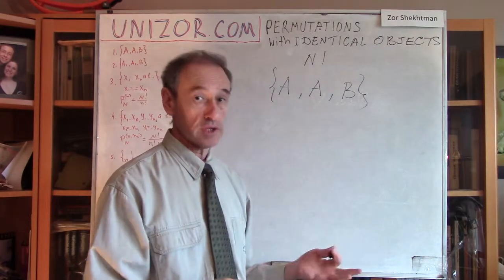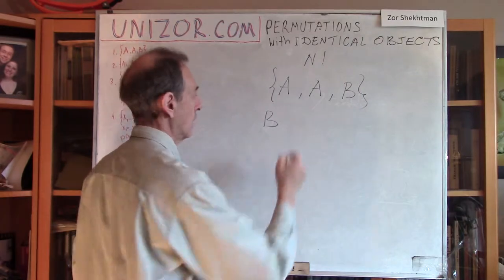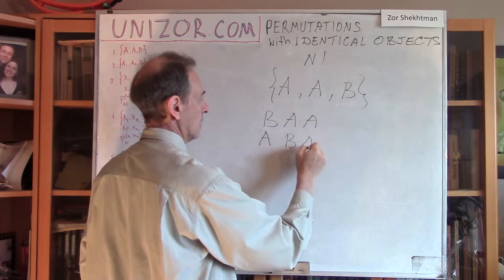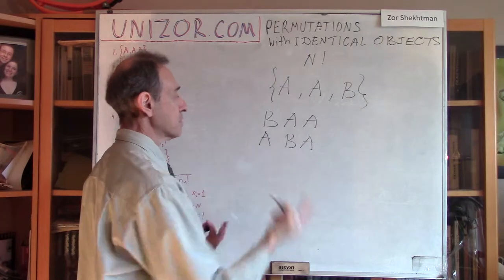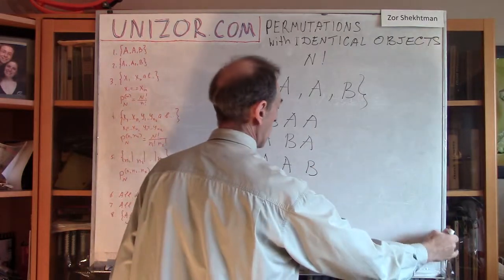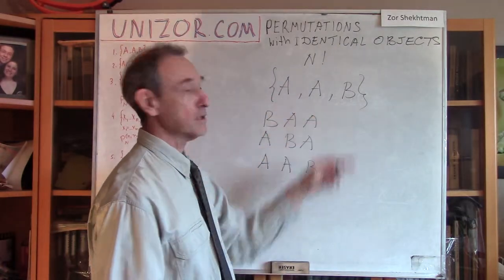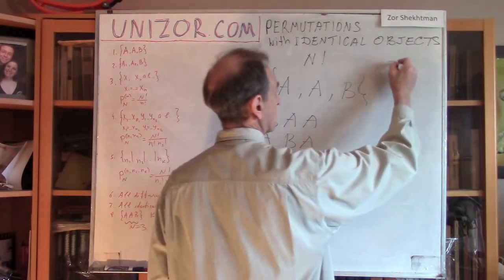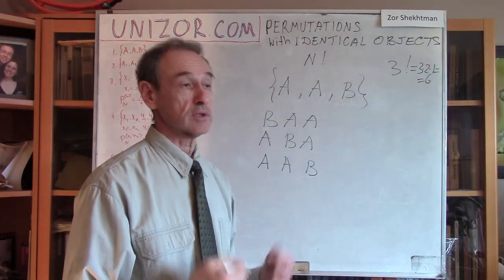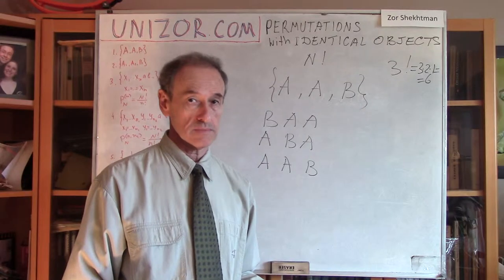Letter B can be in the first place, and then there is no other choice but placing A and A after it. Letter B can be in the second place — that's one combination, and there are no others with B in the second place. Finally, B can be in the third place, and that would be combination number 3. There are no other combinations. Now, if our objects were all different, I would have 3 factorial, which is 3 times 2 times 1, which is 6 different orderings. But with identical objects, I have a significantly smaller number of different combinations.